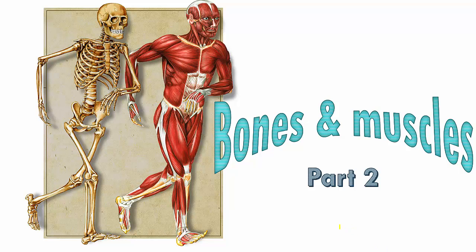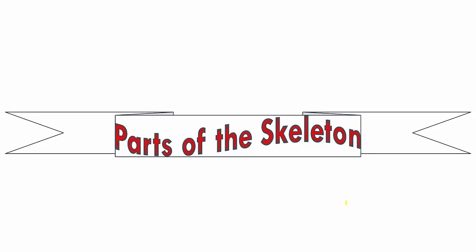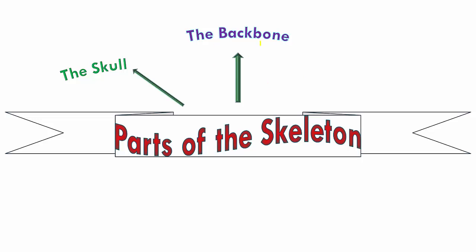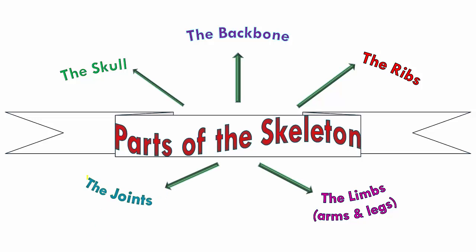Hello children and welcome to part 2 of bones and muscles. In the previous part we spoke about the different parts of the skeletal system — the skull, the backbone, the ribs, the arms and legs. We left out only the joints. So in this part we will be focusing on what joints are, and we'll move on to meet somebody special called the muscle man.